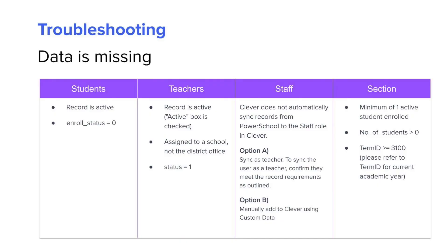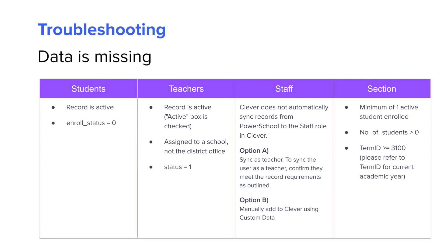The most common issue a district may encounter is missing data. Clever has specific requirements that must be met for a record to sync. For students, their record must be active and have an enrollment status of 0, which defines the student as active in PowerSchool. For teachers, their record must be active and have a status of 1, which defines the staff member as active in PowerSchool. Additionally, the user must be assigned to a school, not the district office.